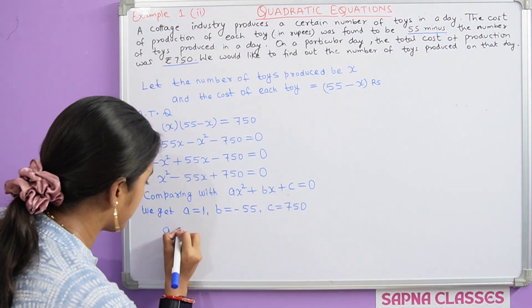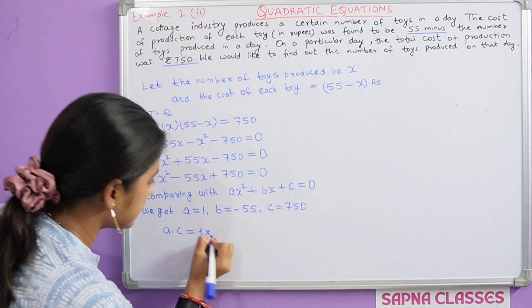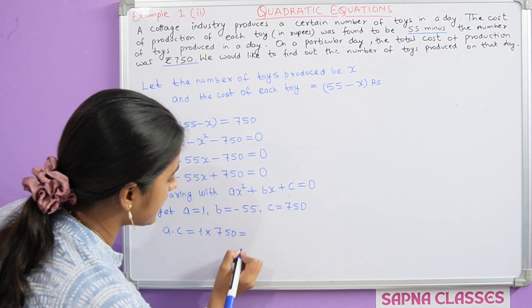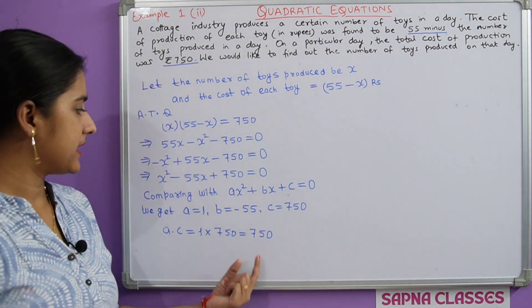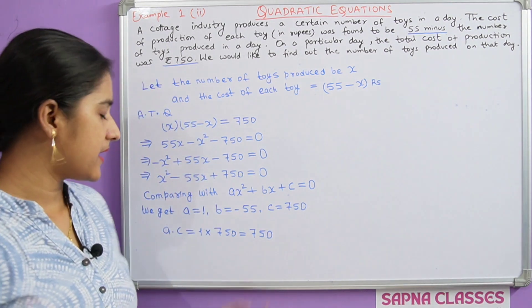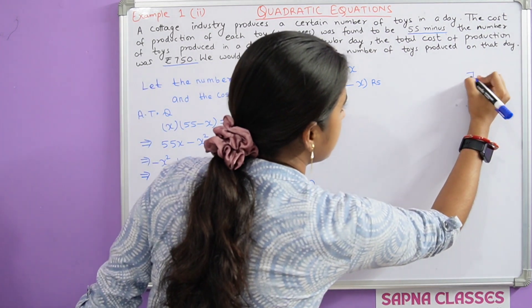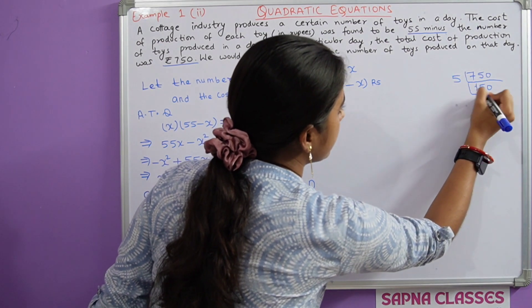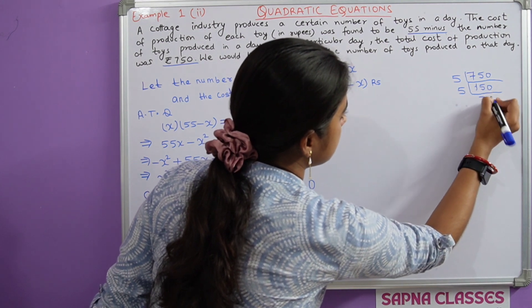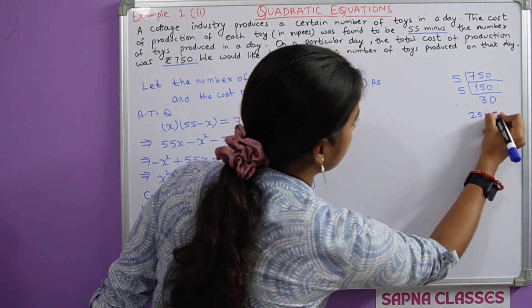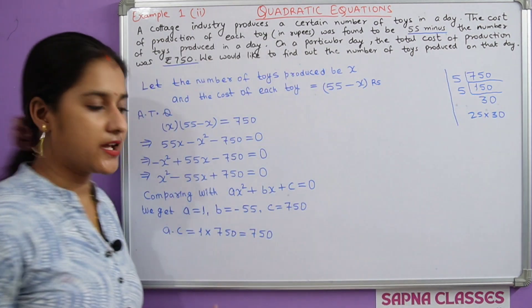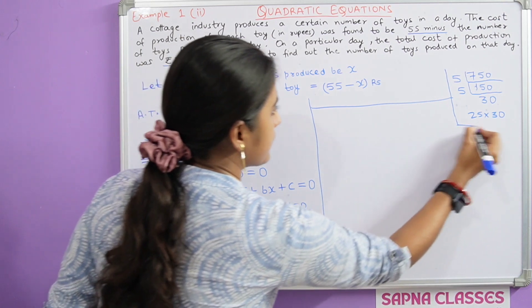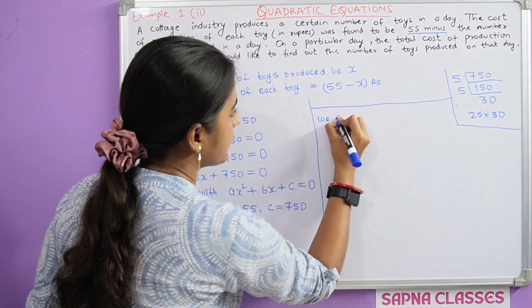To a dot c equal to 750 and middle term minus 55. The factors of 750 are 25 and 30, which add to 55.